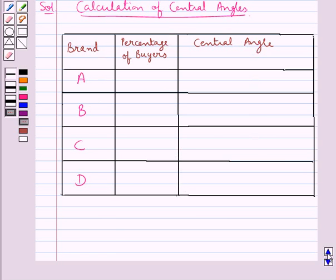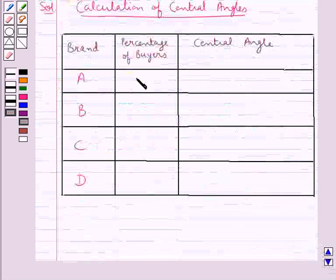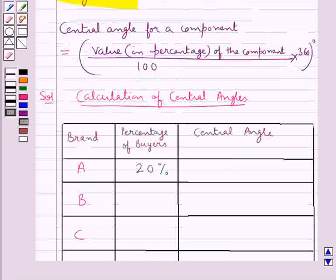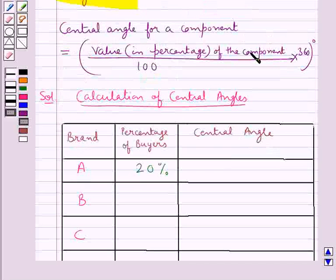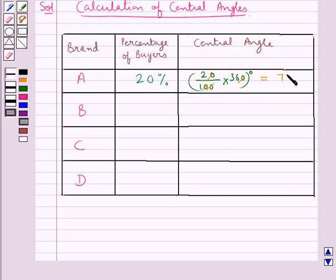For brand A, the percentage of buyers is 20%. Using the central angle formula, the central angle is given by 20 upon 100 into 360 degrees. Cancelling the zeros, we get 2 into 36, which equals 72 degrees.